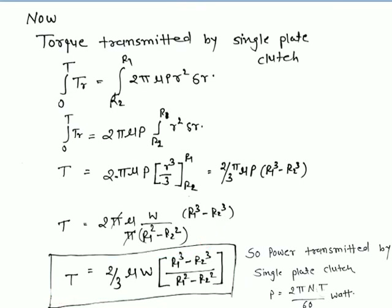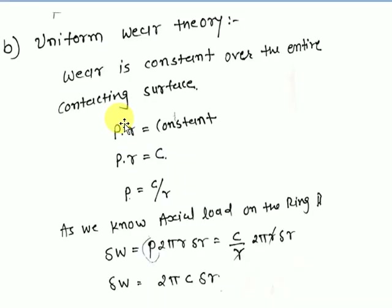After finding torque T, the power transmitted can be calculated as: Power = 2πNT / 60 (in watts). Now moving on to the second theory — the uniform wear theory. In this theory, wear is assumed constant over the entire contacting surface.